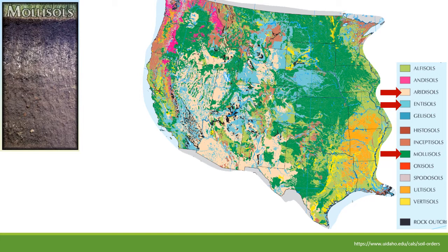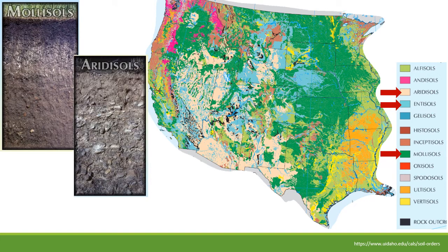Many of these beautiful, rich mollisols in ecosystems have been turned into farmland because they were great for farming. Aridisols are also common rangeland soils — shown in a light peachy color on this map. They are dry, arid soils with not a lot of organic matter. They're often rocky and can have salts accumulating on the top because there's not enough moisture to pull that salt down through the soil. Aridisols are kind of blocky and not very well developed.